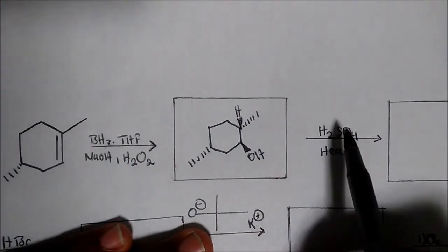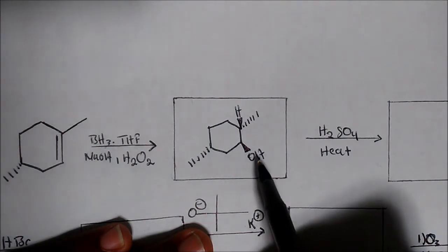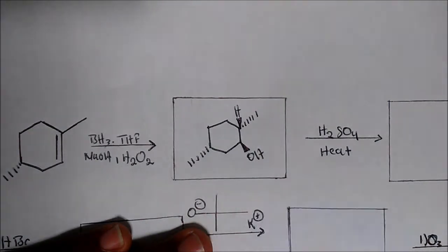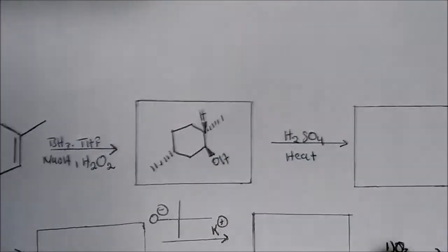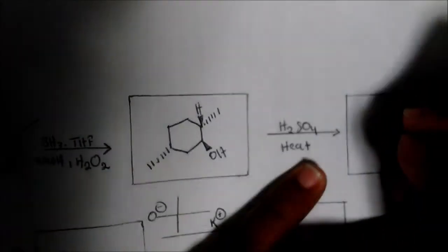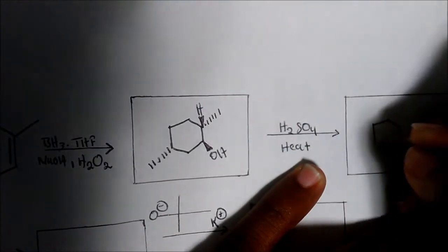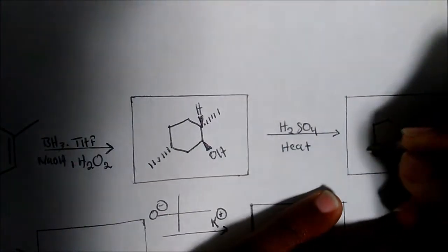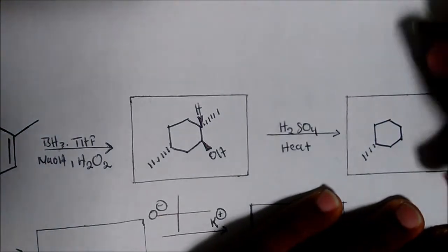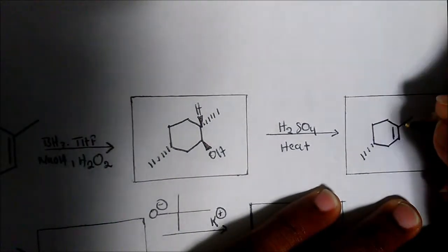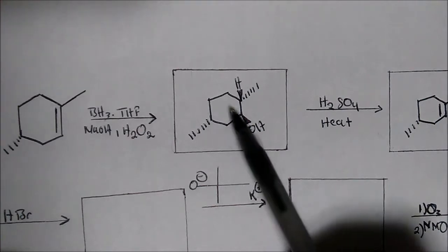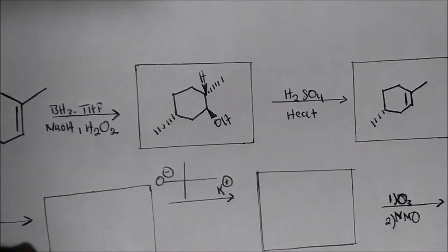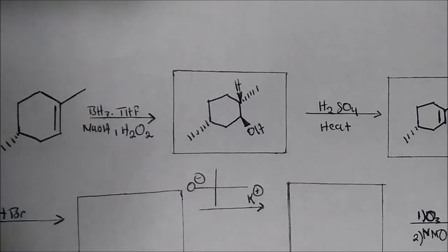Your alcohol cannot leave, so it needs protonation first and forms the water, kicks off the water and the water comes in and acts as a base to give you that neutral alkene. So interestingly, the product should be something that looks like this, the same thing we started with.